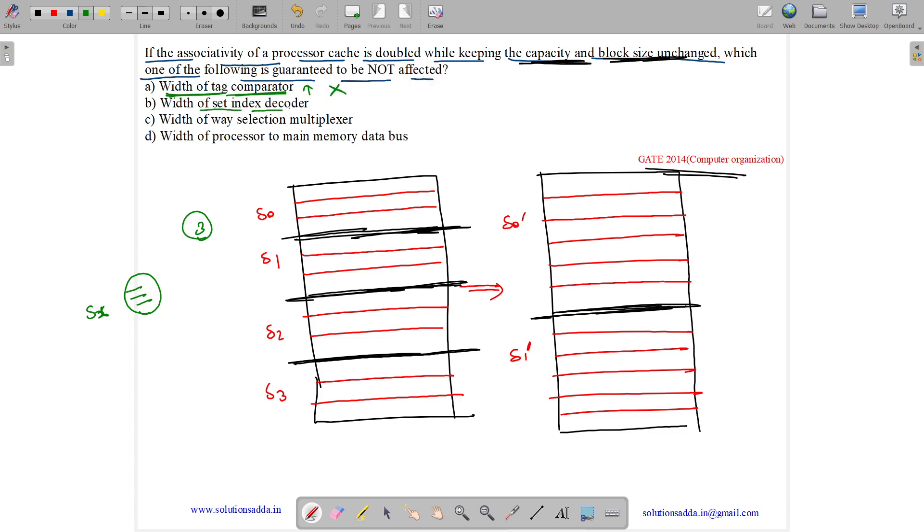Width of set index decoder, here we have just four sets. So we will need a two cross four decoder. But here we will have only two sets, so number of sets is reduced, so width of the set index decoder will also reduce. Here we will just need a one cross two decoder. So it will reduce, it won't get affected, no, it will get affected, so this is false.